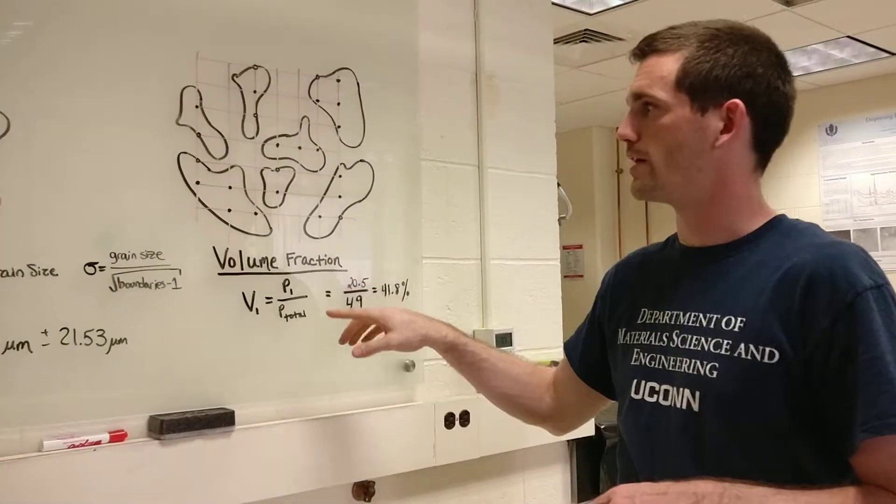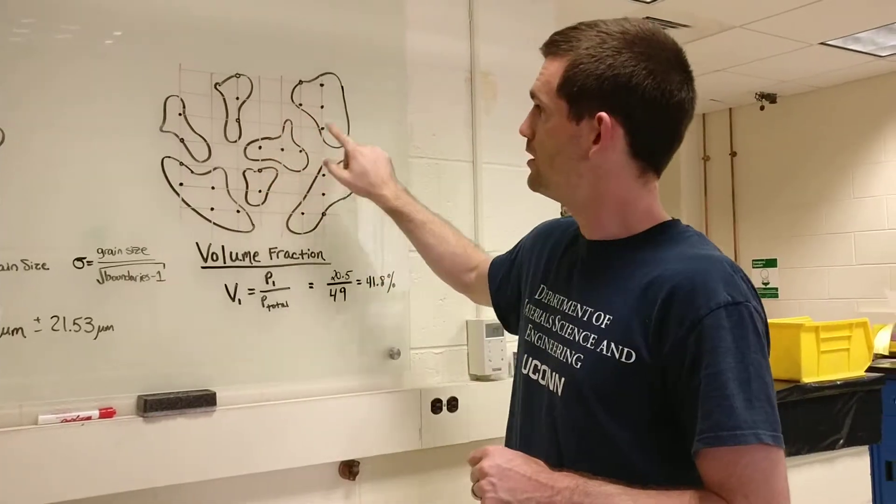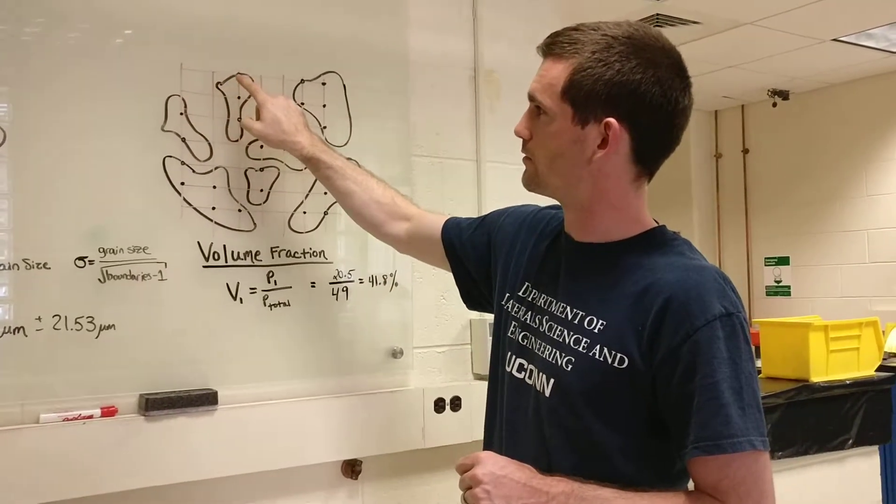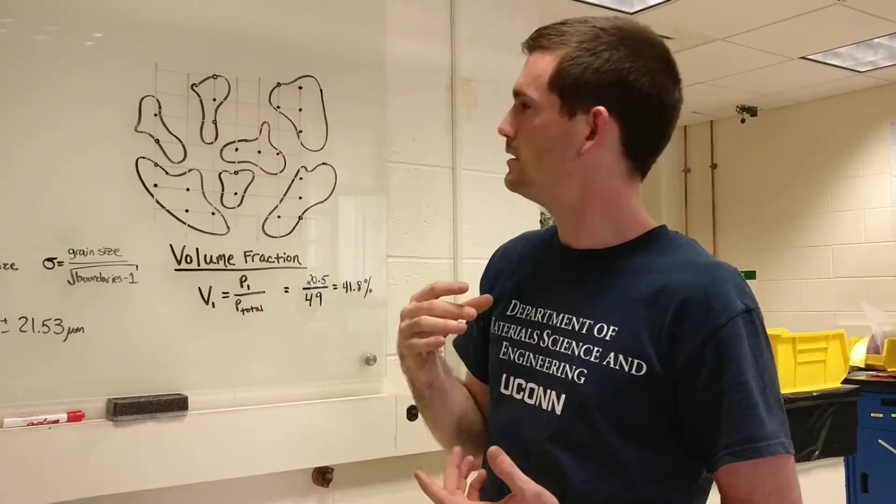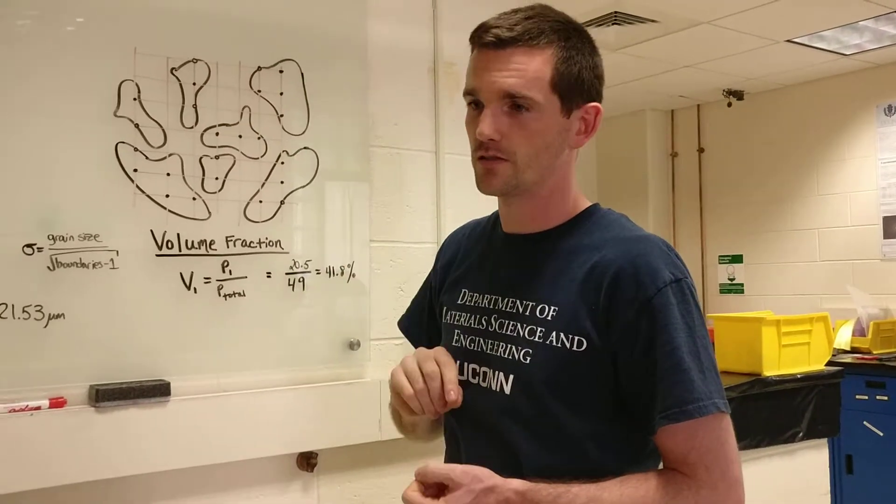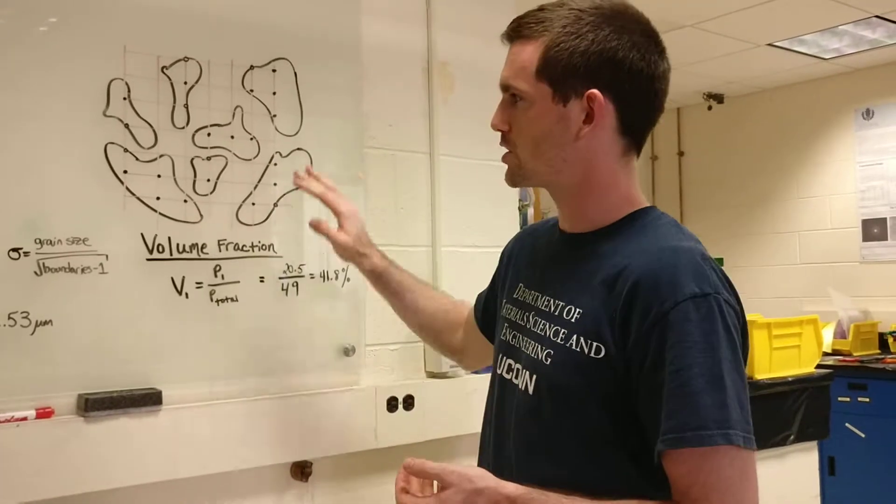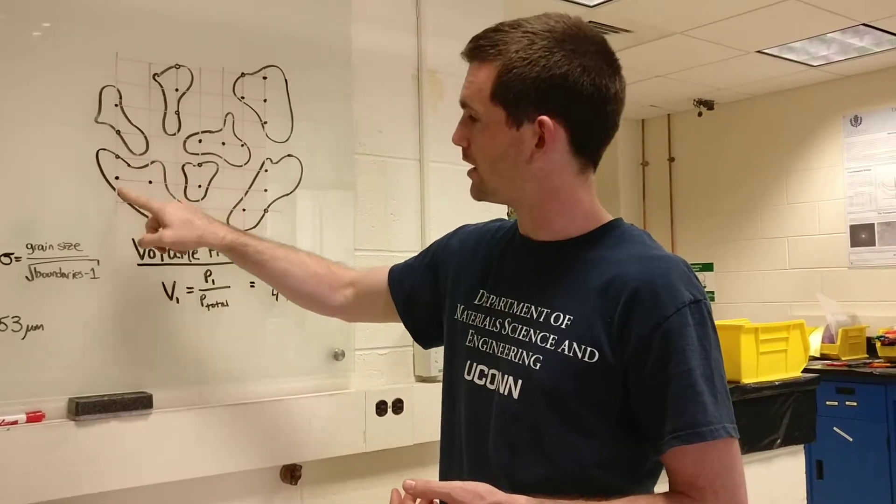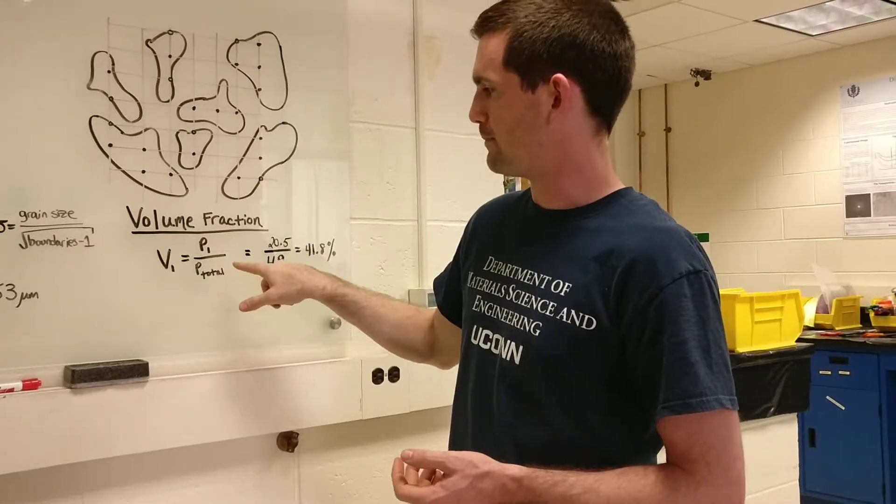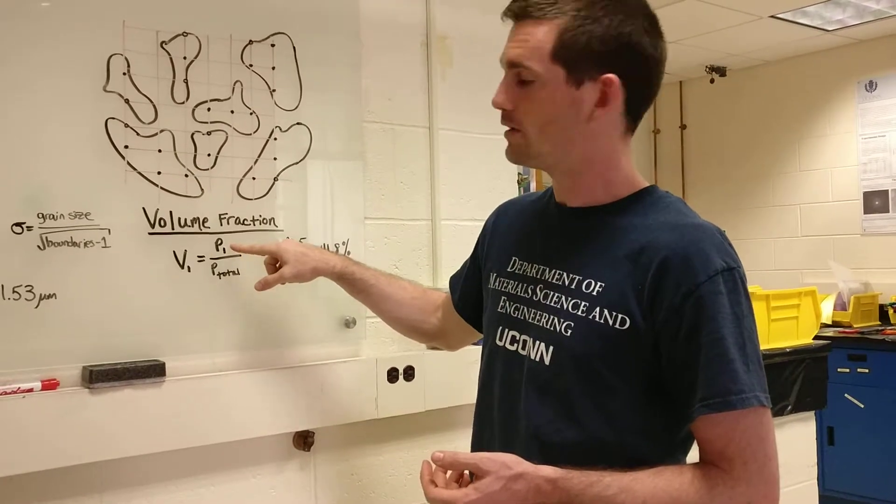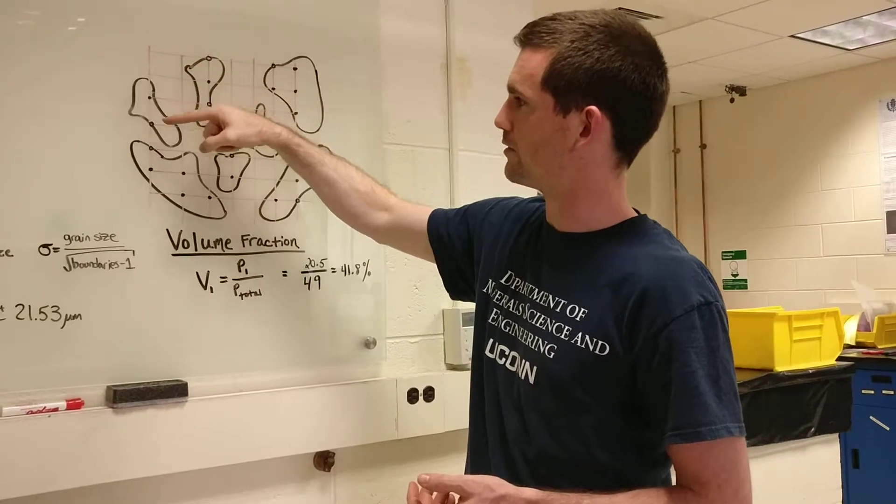The second concept is volume fraction. If we take that same microstructure and we overlay a grid on top, we'll basically look at all these intersections of the grid lines and see are they inside the phase that I'm trying to count or not. If they're on the boundary between two phases, then we have these little open circles which indicate they're on the edge, in which case we count those points as one half. All the points that are inside the phase we count as one. We say how many points did we count total and how many total points are there. This is a grid that is 7 by 7.